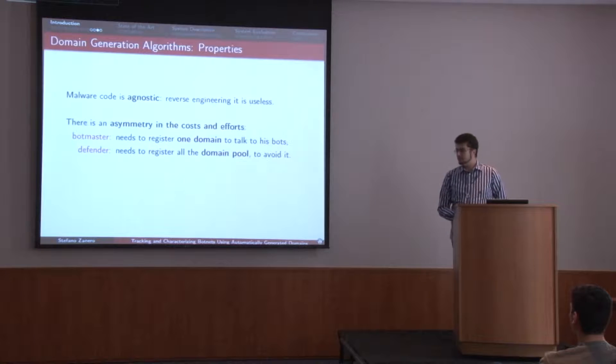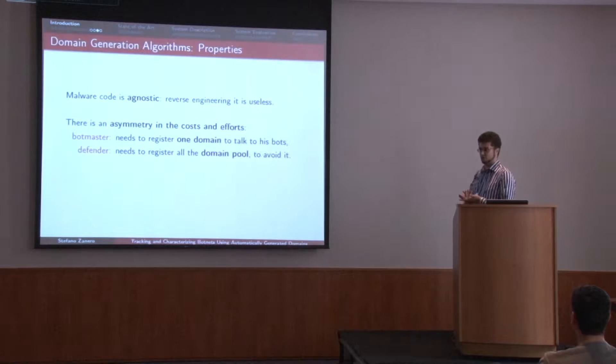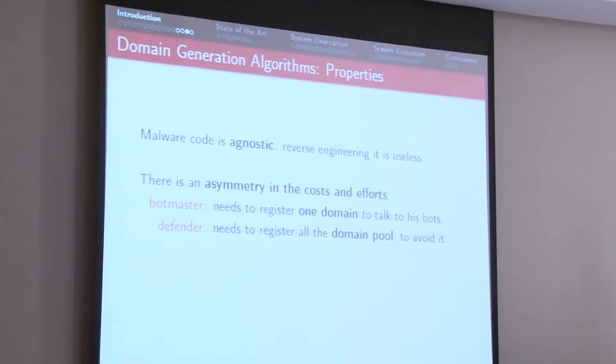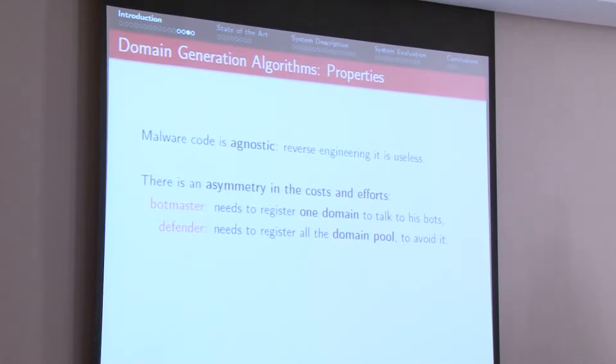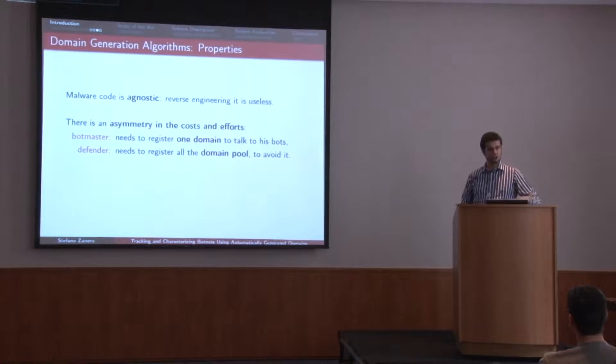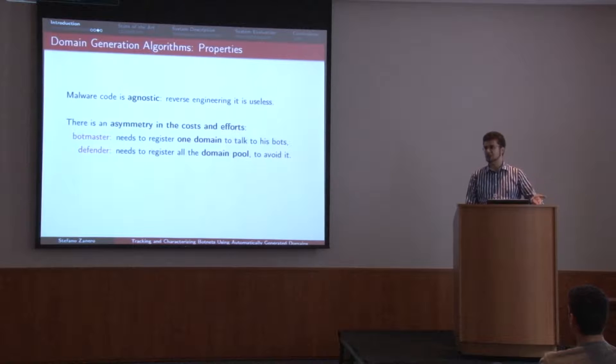Basically, this scheme makes it very hard for the defenders to actually block the domain name registration and the connection of the bots. Not only that, but since the malware code only contains the algorithm for generation and not the seed, the malware code is what we would call agnostic. If you reverse engineer it, you get a part of the solution but not all of it. This generates data asymmetry — the botmaster has a much lower cost than we have as defenders.